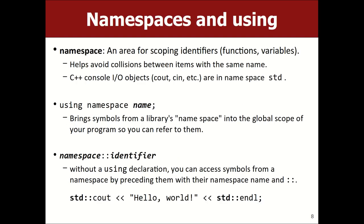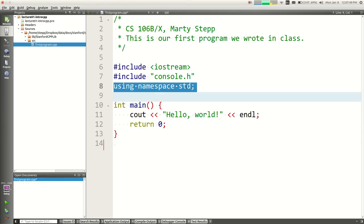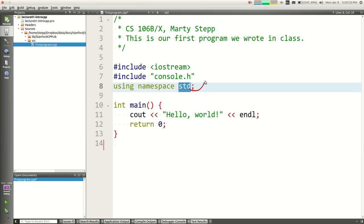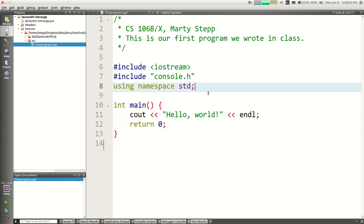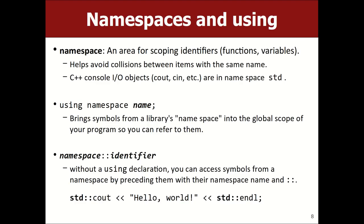There's also a statement called using. If you write a using statement it makes names from a library accessible in your program. In all of our programs we'll have the statement using namespace std at the top — this means all the variables and functions that came from that library, I want to be able to refer to those names in my program. If you don't use a using statement there's an alternative syntax, but I'm not going to use that, so I'll skip it.